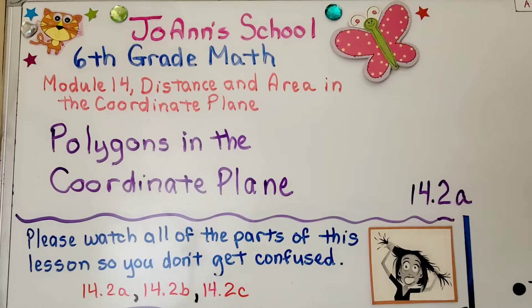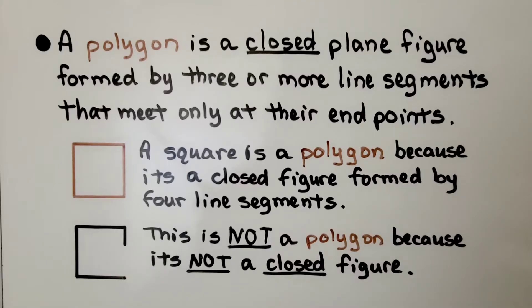We're now at lesson 14.2a and we're going to talk about polygons in the coordinate plane. A polygon is a closed plane figure formed by three or more line segments that meet only at their endpoints.